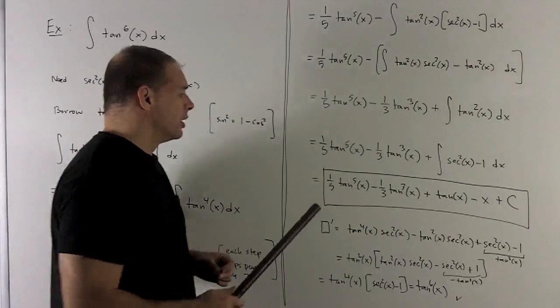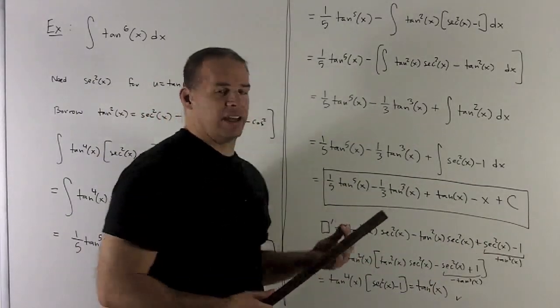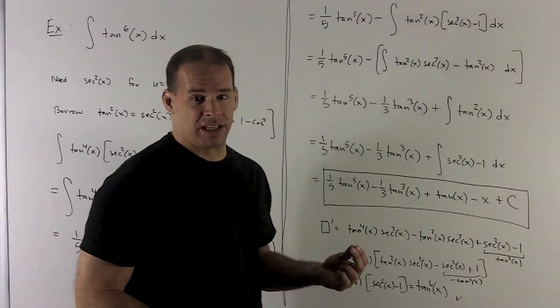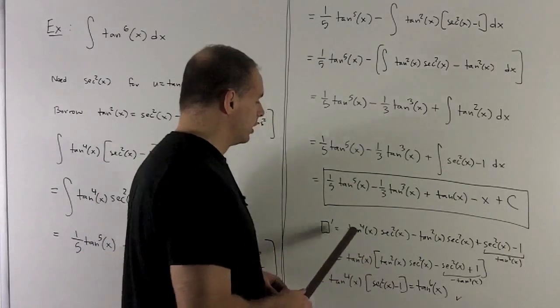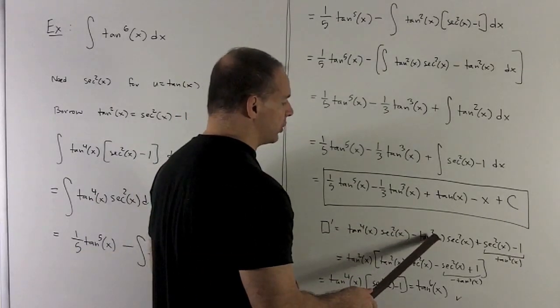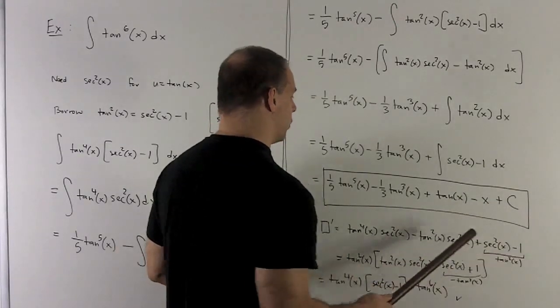We check our work, so I take the derivative of what's in the box. So the idea here is you're just going to drop your exponent down, subtract 1 off of it, multiply by secant squared x. So here it goes to a 4, secant squared x. Here it goes to a 2, secant squared x. And then here, secant squared, here, minus 1.